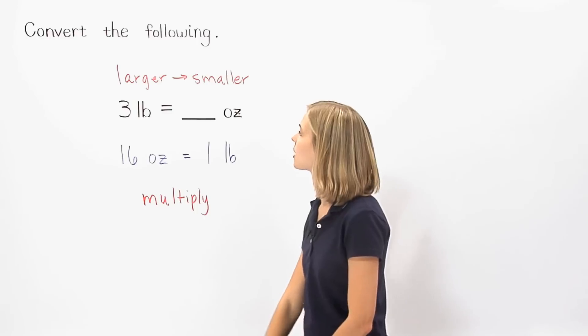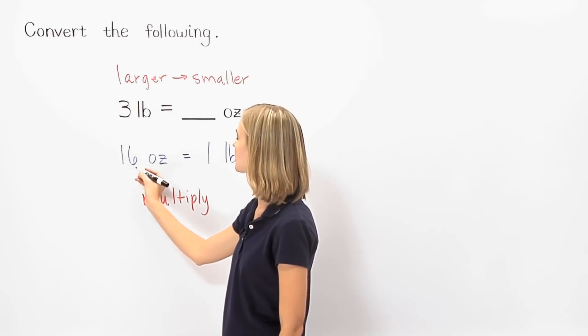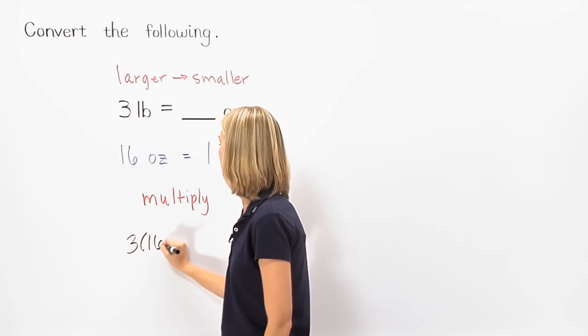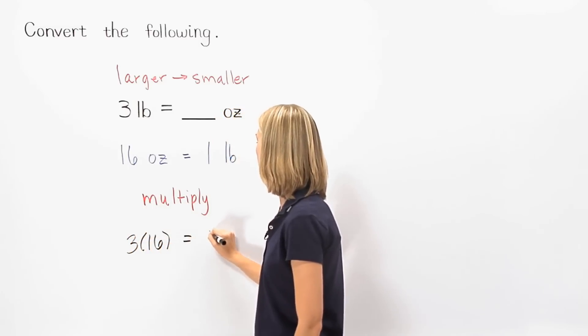So we multiply three times sixteen, which gives us forty-eight.